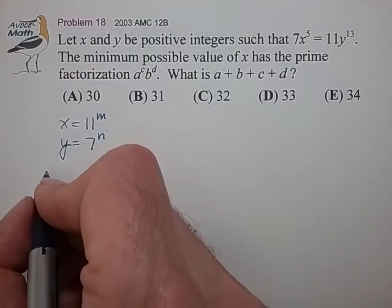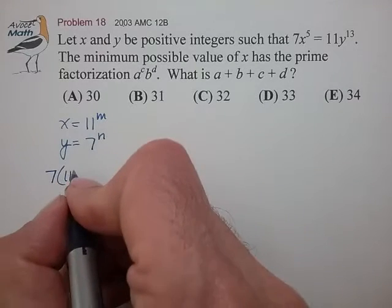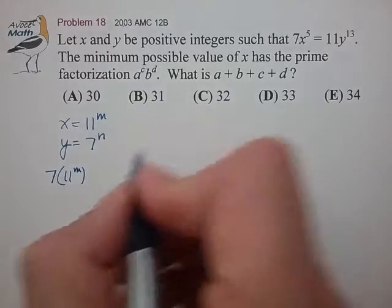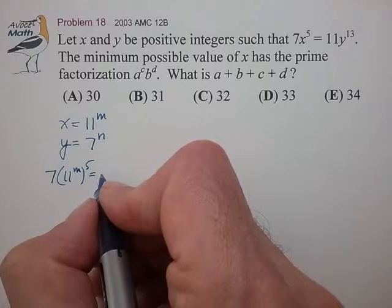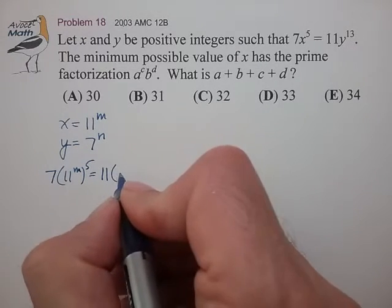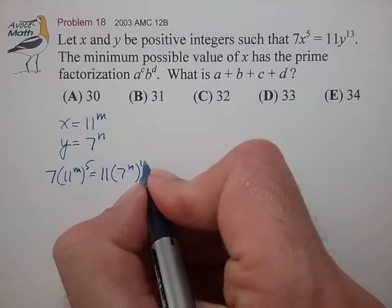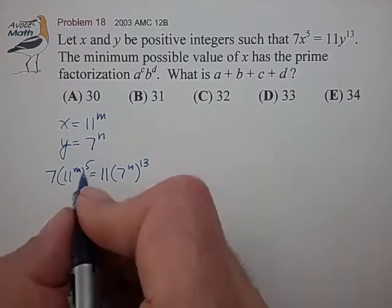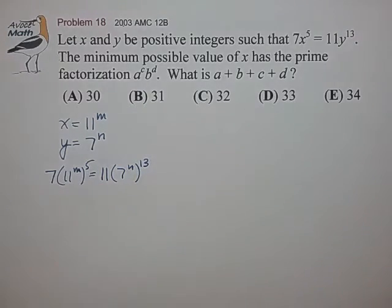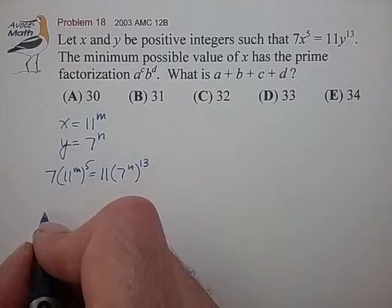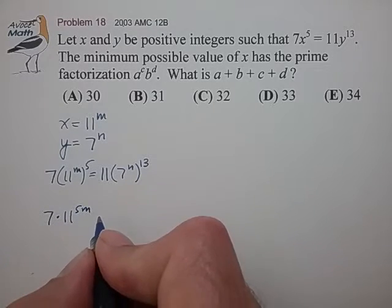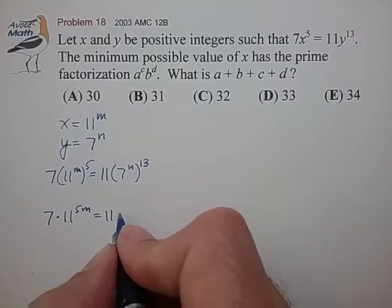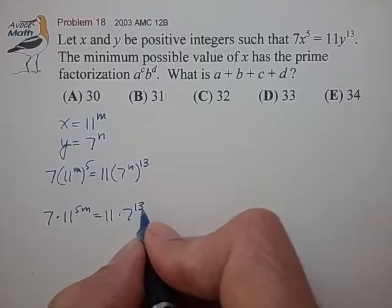So substituting that back in, I find that 7 times (11^m)^5 is equal to 11 times (7^n)^13. And let me bring these exponents down in through the parentheses and I find that 7 × 11^(5m) is equal to 11 × 7^(13n).